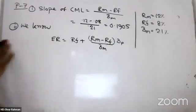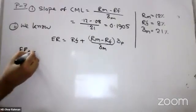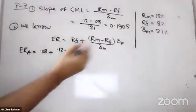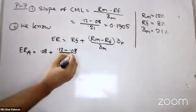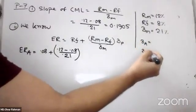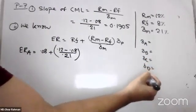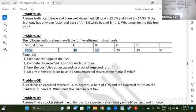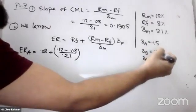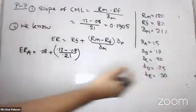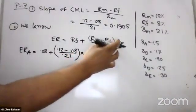Sigma values and percentage data for funds A, B, C, D, and E are listed, with corresponding sigma p and return figures across each fund.